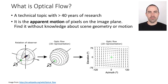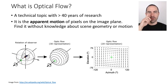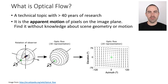Optical flow is the apparent motion of pixels on the image plane. It means that when we move things in our retina, the patterns of brightness in our retina move — and that's all that we perceive. The motion of those brightness patterns is what we call optical flow.